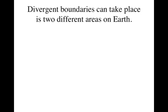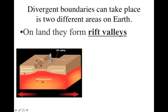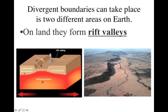Now the other place a divergent boundary can happen is on land, and if it happens on land we call it a rift valley. Make sure you write down: divergent boundary on land gives you a rift valley. We have two plates spreading apart from each other, leaving a gap where the asthenosphere bubbles up and forms new lithosphere. But unlike the ocean where the asthenosphere pushes out, in the air it tends to make a valley — the opposite of a ridge.